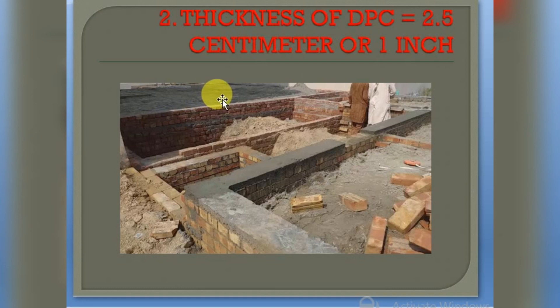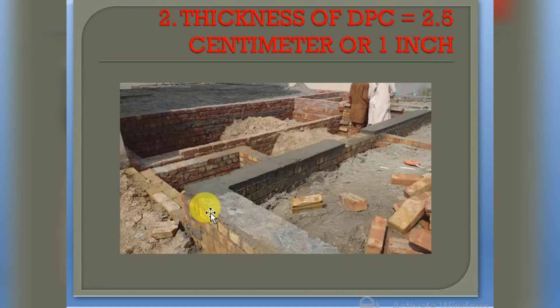DPC is used to prevent moisture from entering into the superstructure. Here I have shown you the DPC — this concrete placed here is called DPC. The minimum thickness of DPC must be 2.5 centimeters or 1 inch. You can provide more than this, but the minimum should be 2.5 centimeters.